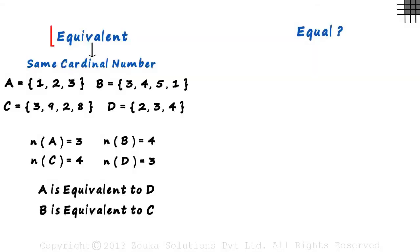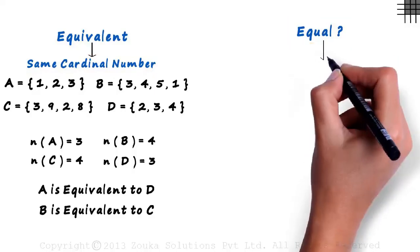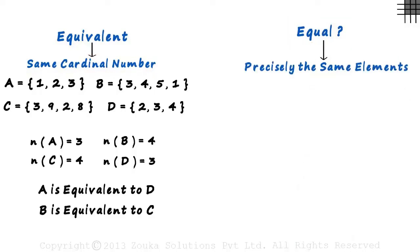We saw that two sets are equivalent if their cardinal numbers are the same. But when are two sets equal? Two sets are equal when they have precisely the same elements. You will soon know what I mean when I say precisely. Consider these two sets.